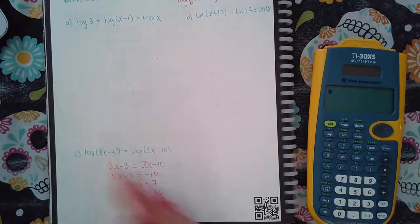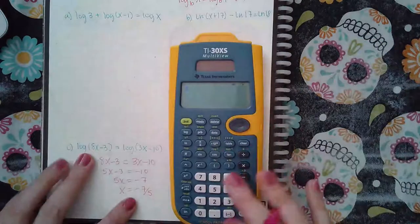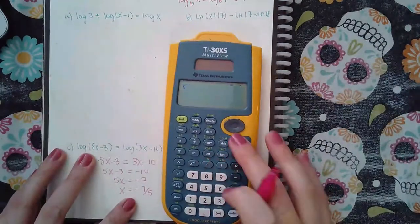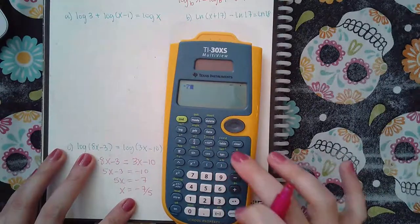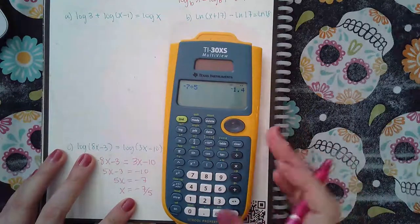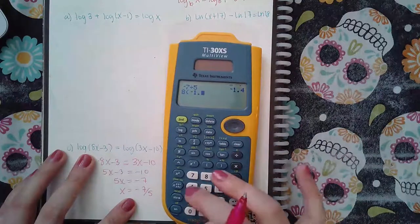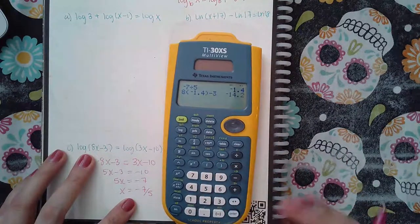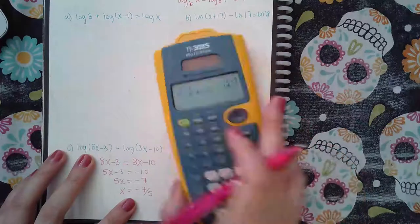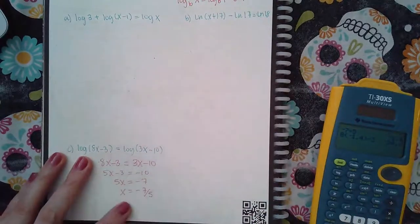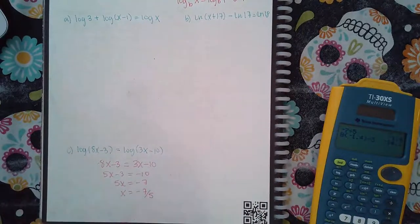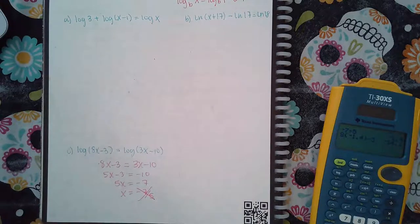You can double check to make sure they don't make any of the arguments negative. 8 times negative 7 over 5 is negative 1.4, so 8 times negative 1.4 minus 3, that's a negative value which means it's going to make this argument negative.